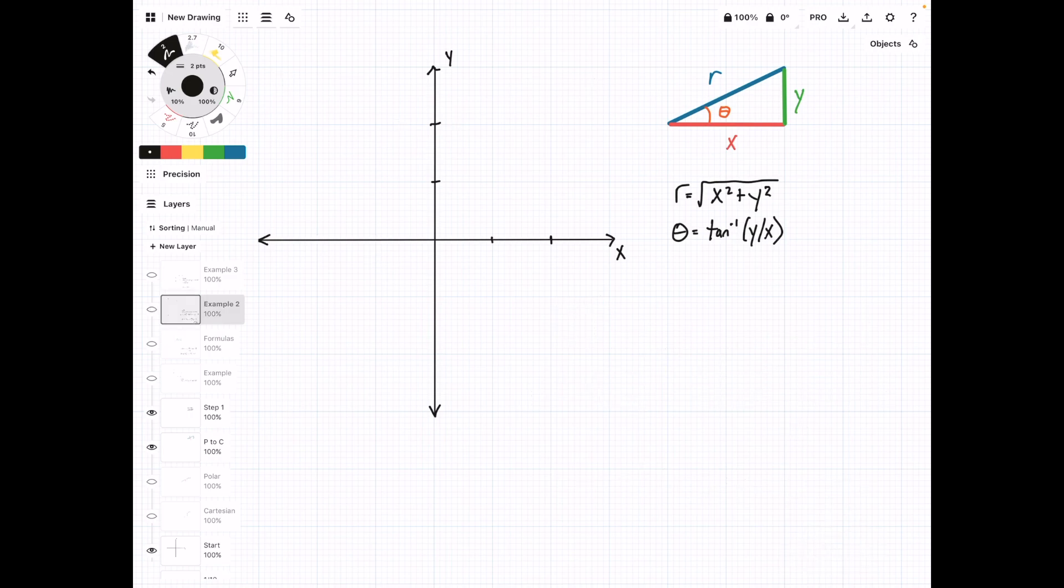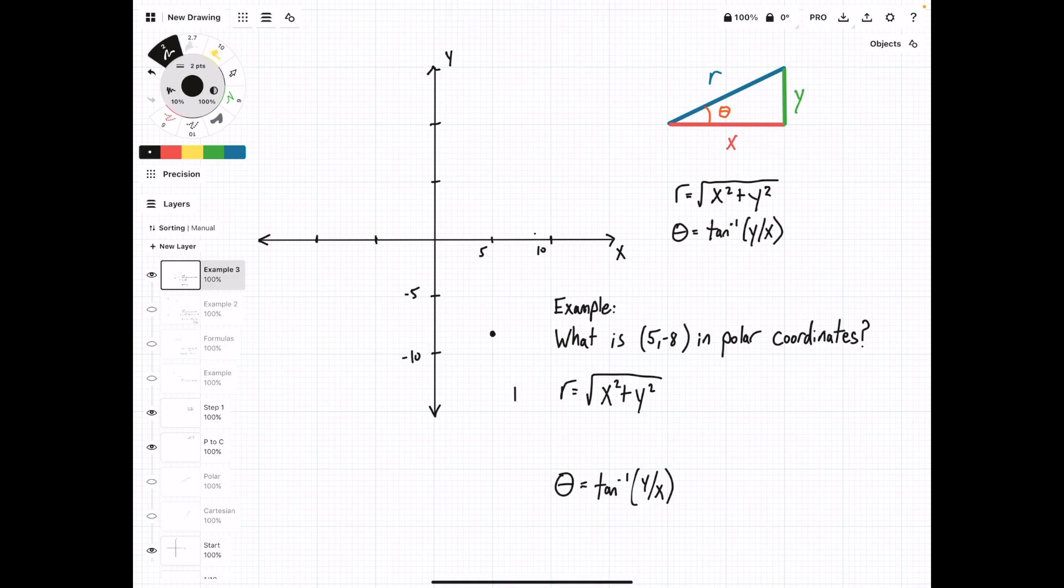So now we're going to look at one more problem here. What is (5, -8) in polar coordinates? So the point now is in quadrant 4 down in the bottom. And we'll figure out what r is. Square root of 5 squared plus negative 8 squared, square root of 25 plus 64 equals square root of 89, and this equals 9.4.